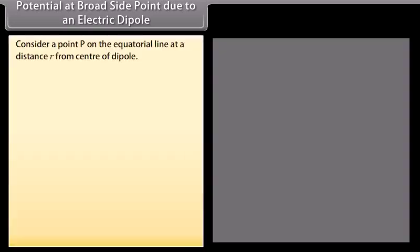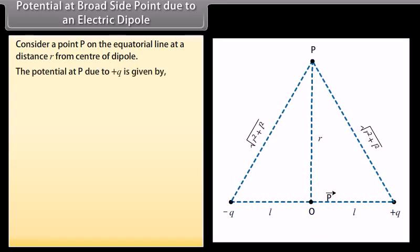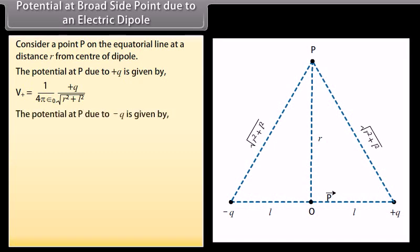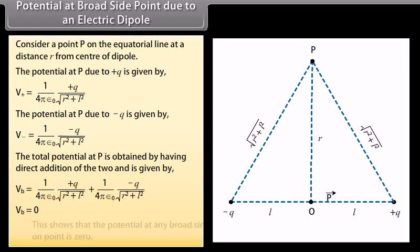Potential at the broadside point due to an electric dipole. Consider a point P on the equatorial line at a distance R from the center of the dipole. The potential at P due to plus Q is given by V_positive equals 1 over 4π ε₀ multiplied by Q upon the square root of (R squared plus L squared). The total potential at P equals zero. This shows that the potential at any broadside-on point is zero.